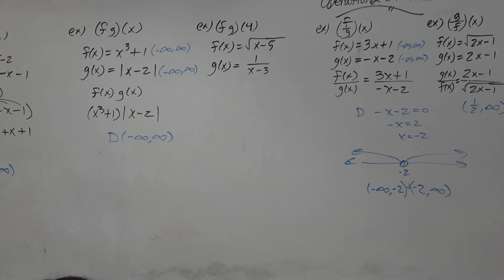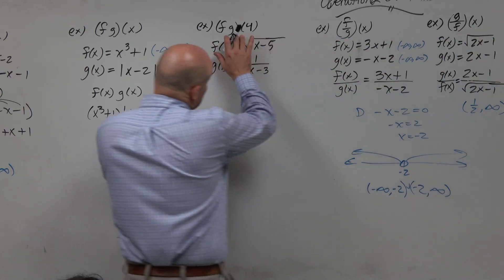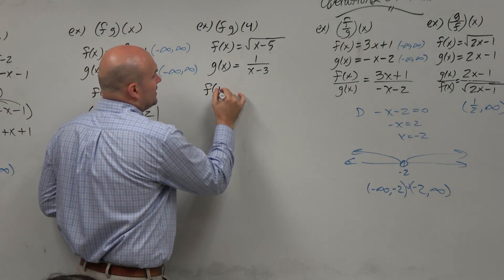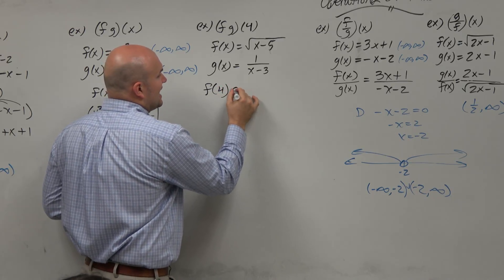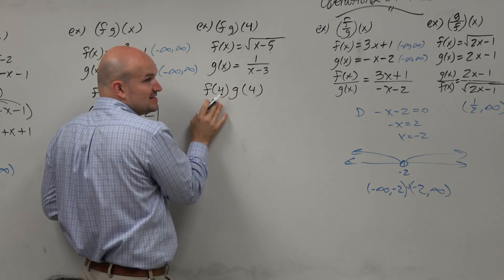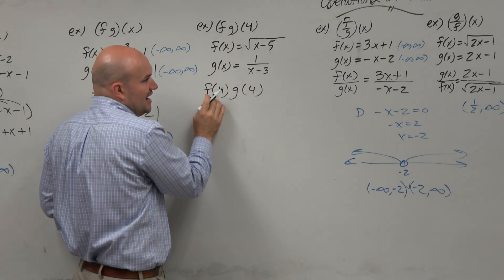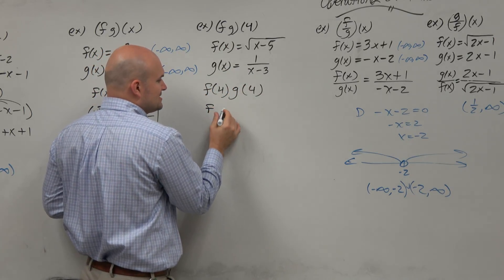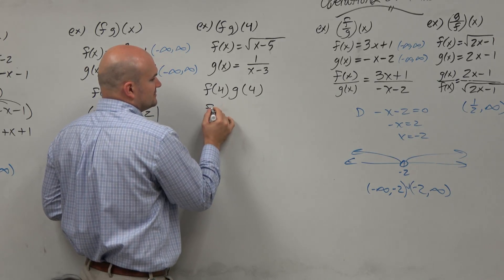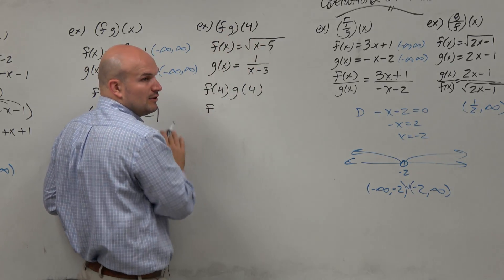Just looking at this, when you have f of g of 4, what this means is basically finding f of 4 times g of 4. So when you see f times g of 4, that basically just means evaluate f times g of 4, or you can multiply the two functions and then evaluate for 4.